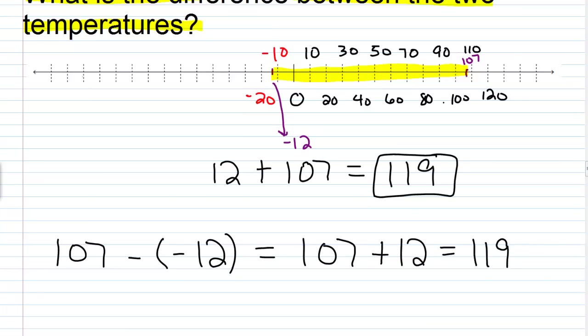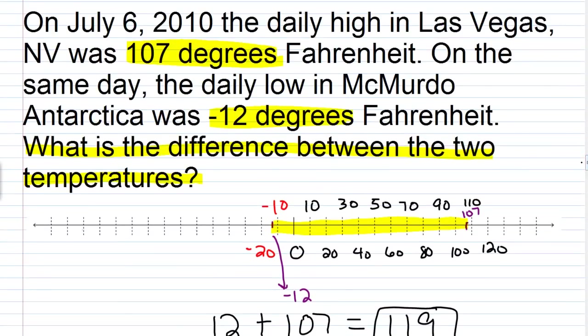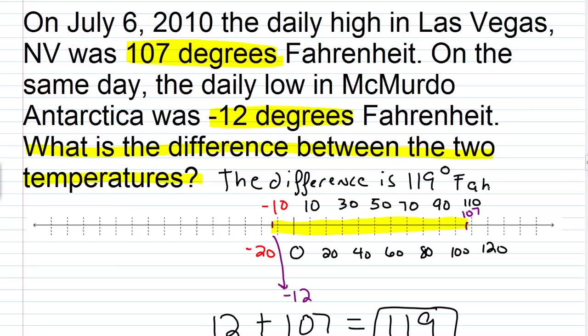I'm using the number line to visually represent what's going on and why this is the case. To find the difference between these two values, you go from negative 12 to 0 and then from 0 to 107, and add those two amounts together. Our answer for this problem is 119, so the difference is 119 degrees Fahrenheit.